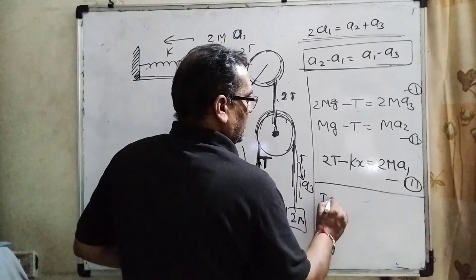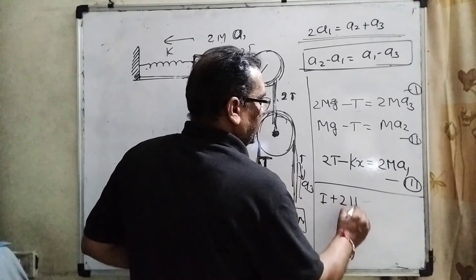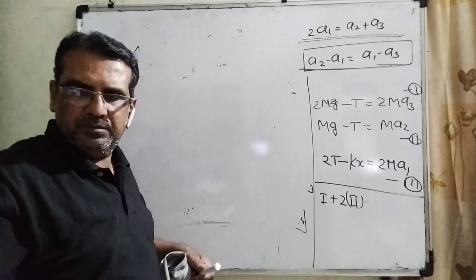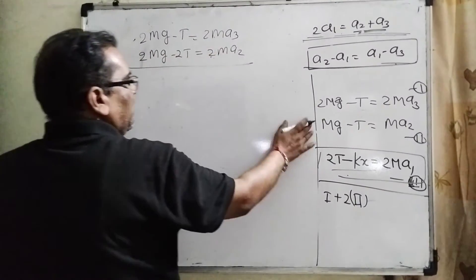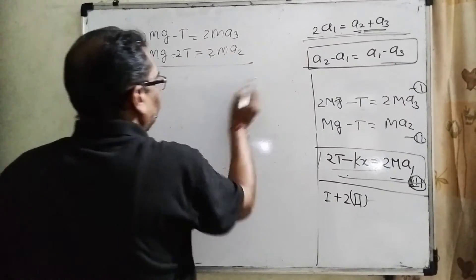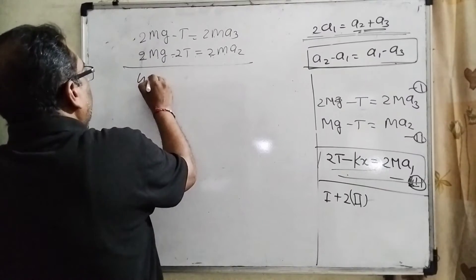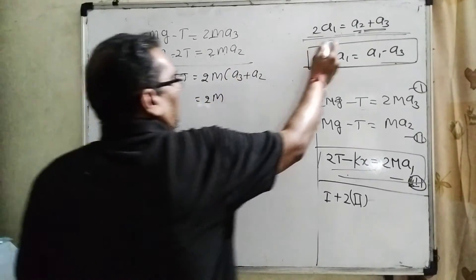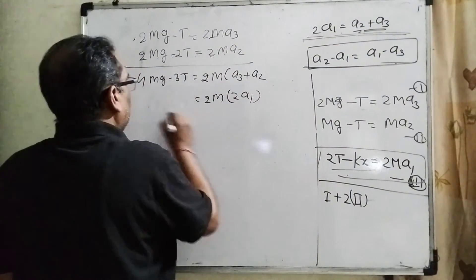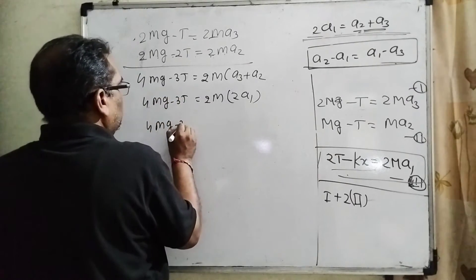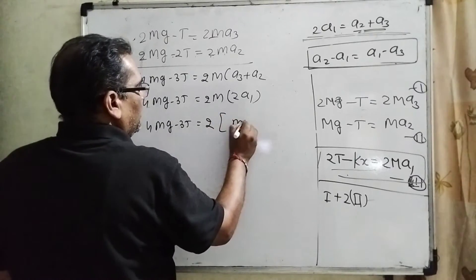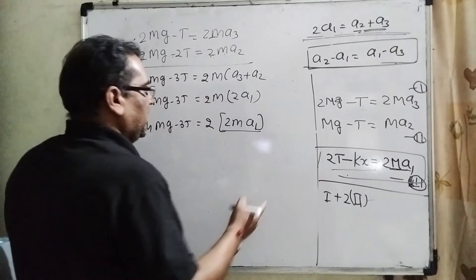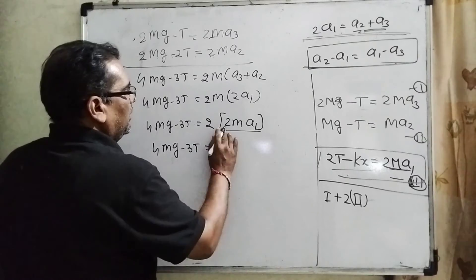Now you can see that here 2T = 2ma1. But here this force is applied. Restoring force is in the opposite direction. Therefore it can be written as minus kx, because k is the spring constant and x is displacement. So it is the third equation. Now, solving first plus multiplying second equation by 2 and then adding. According to the condition, first equation put as it is, multiply second equation by 2: 2mg - 2T = 2ma2. Multiply 2 on both sides, then adding. Now it becomes 4mg - 3T, 2m get common. Here a3 + a2. Here a3 + a2 can be written as 2a1.